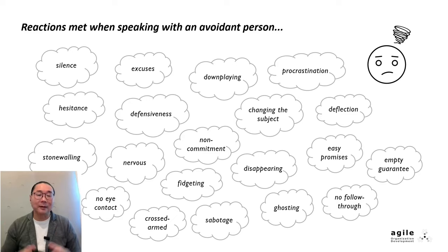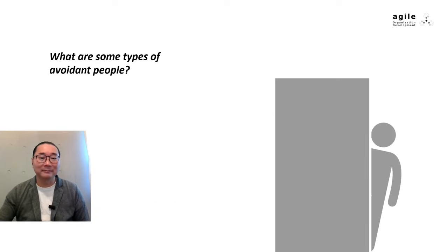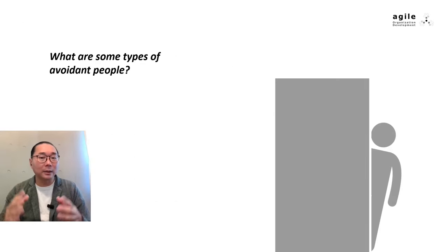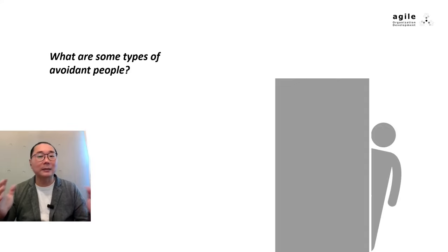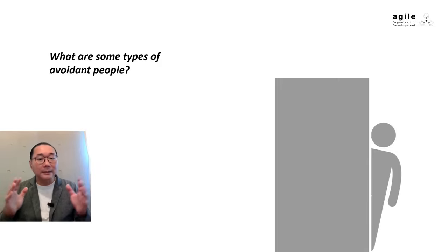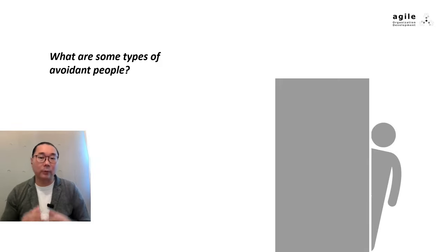And finally, sabotage — counterproductive behavior that actively undermines our ask. Through this initial exercise, I realized that avoidant behavior manifests in various ways. Most likely, there are different personality types, traits, and situations that contribute to avoidance. So I did some design thinking to develop a few personas representing these different avoidant personalities.